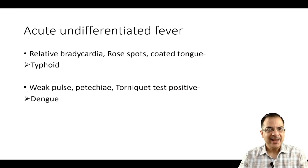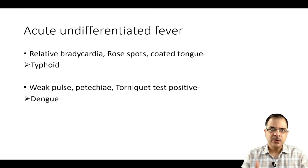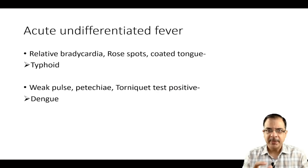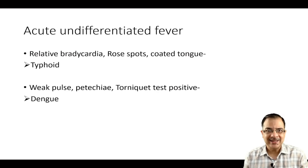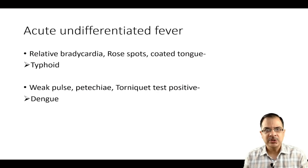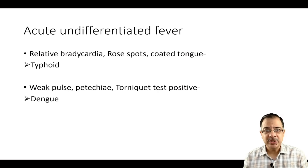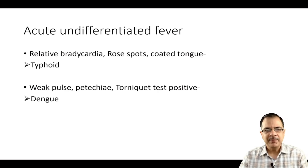For acute undifferentiated fever, relative bradycardia is an important sign — the pulse does not increase to the expected extent. Normally, for every one degree Fahrenheit increase in fever, the pulse increases by 10 per minute; if it does not, this is relative bradycardia. For typhoid fever specifically, look for rose spots (even in Indian patients), coated tongue — which is highly suggestive of typhoid. Weak pulse, petechiae, and a positive tourniquet test indicate dengue fever.